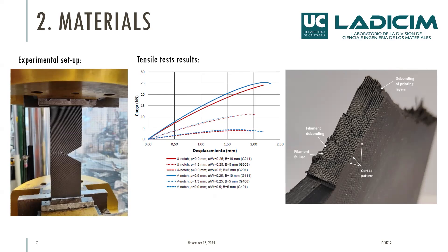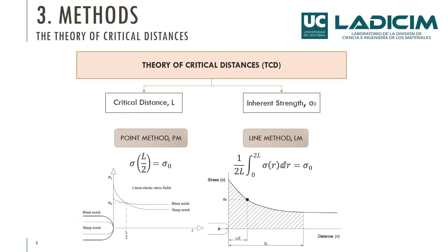As you know, the theory of critical distance uses two parameters: the critical distance and the inherent strength. These characteristics are related, so we can obtain the inherent strength by calibration and then calculate the critical distance. We have two methodologies: the point method refers to half of the critical distance where we evaluate the inherent strength, and the line method is related to twice the critical distance where the inherent strength is evaluated.